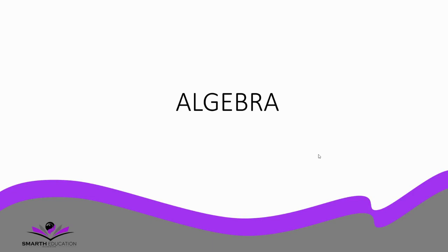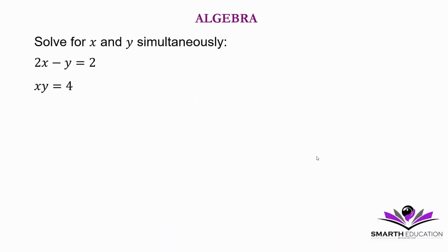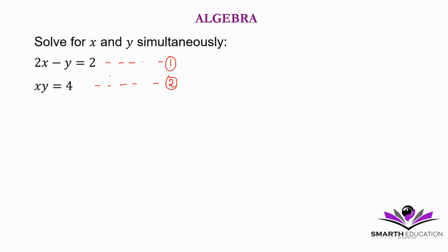Hello smart mathematicians, let's do equation 1.2. Solve for x and y simultaneously. We are given two equations. Let's name them equation 1 and equation 2. There are many ways we can solve these simultaneous equations, but I'll just show you one. The first step will be to create equation 3 using equation 1.